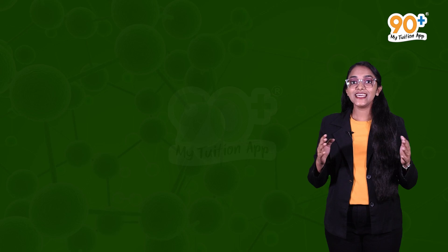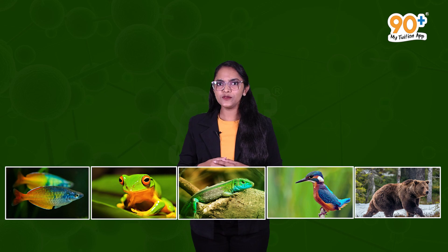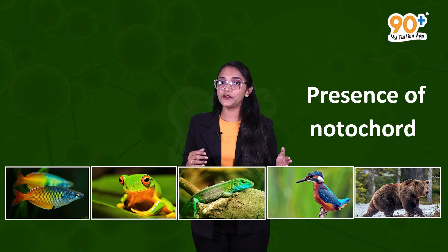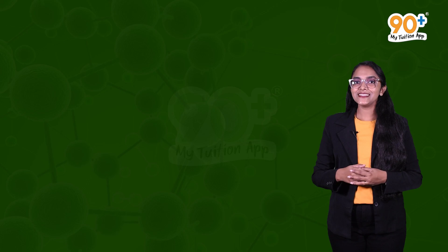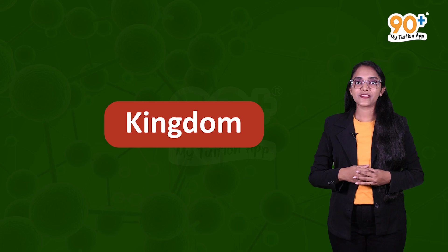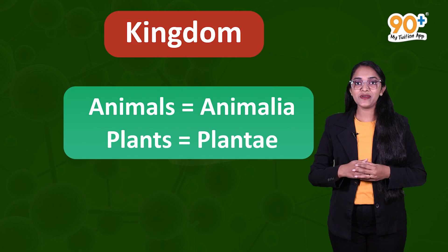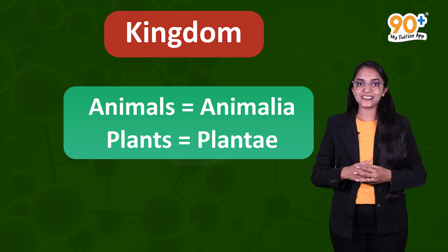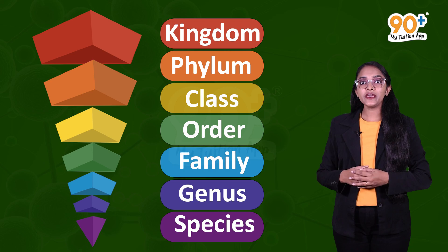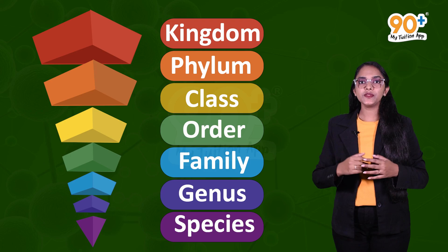The next higher taxonomic category is phylum or division. Phylum is used for animals and division is used for plants. Even a single shared character can classify organisms into a taxon. For example, phylum Chordata includes fishes, amphibians, reptiles, birds, and mammals — they share common characters including the presence of a notochord and a dorsal hollow neural system. The highest category is kingdom — animals belonging to various phyla are under Kingdom Animalia, and plants under Kingdom Plantae.